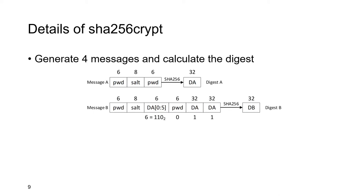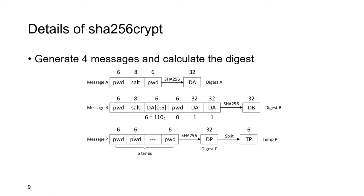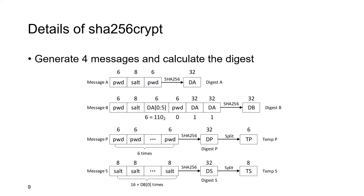Message B is generated by appending a password, salt, and the first 6 bytes of digest A. Then we convert the length of the password into its binary format. From the least significant bit, if it is a 0, we append a password string; if it is a 1, we append a digest A string. Then we calculate the digest to get digest B. Message P is generated by appending the password string 6 times, then we calculate digest P and split the first 6 bytes to get temp P. Message S is generated by appending the salt string 16 plus db0 times, where db0 is the value of the first byte in digest B. Then we calculate digest S and split the first 8 bytes to get temp S.